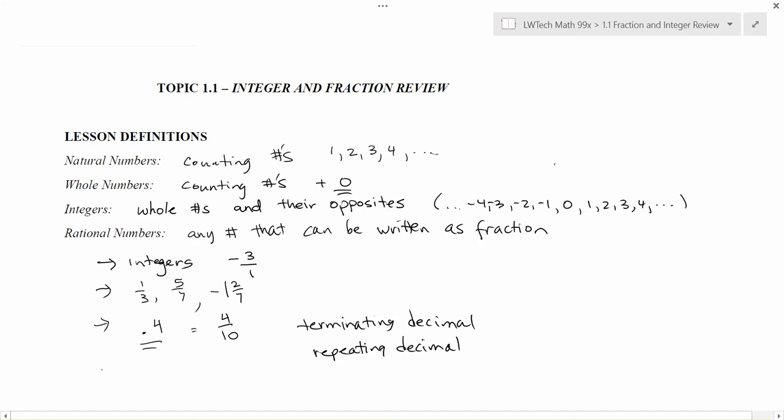So for example, if we have 0.3333333 that goes on forever, that's the same as one-third. So really, at this point, you may be asking yourself, well, what isn't a rational number?